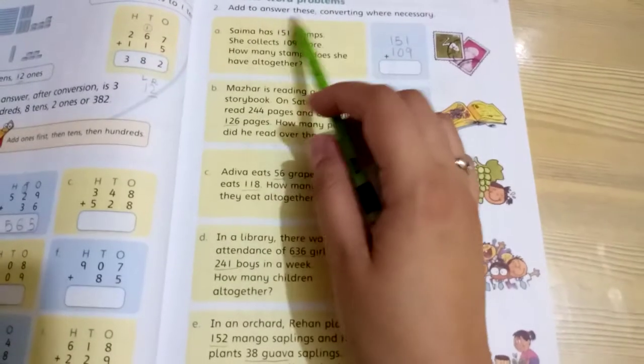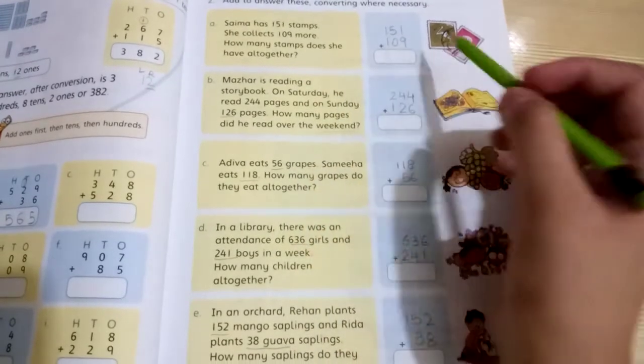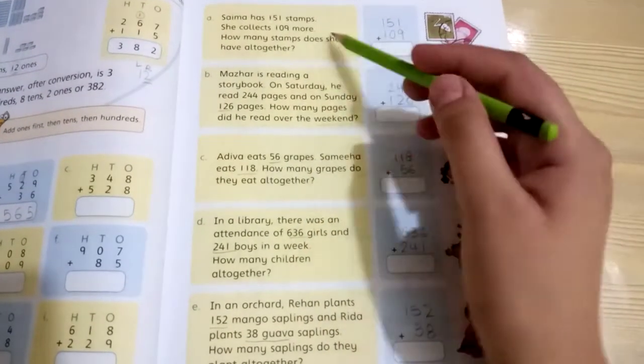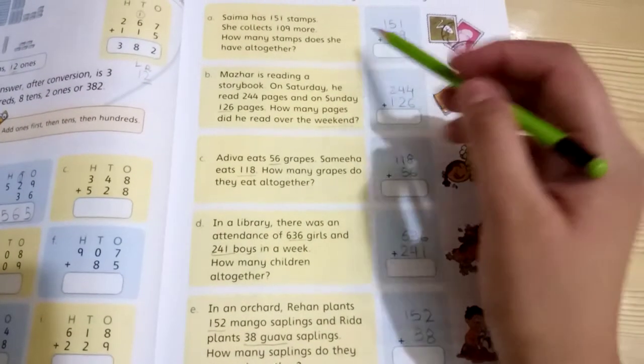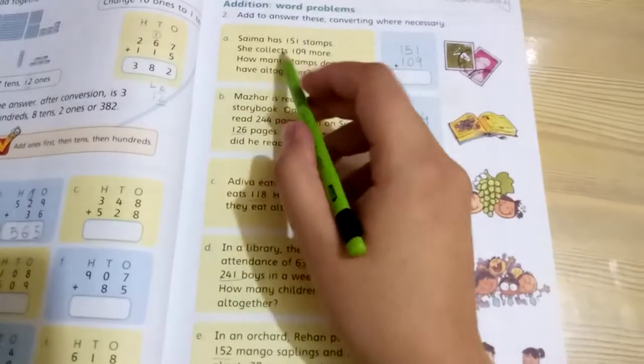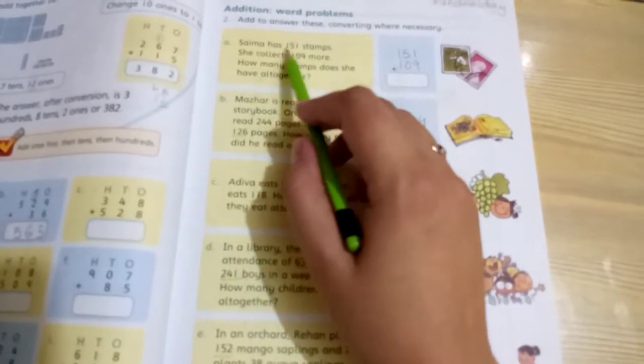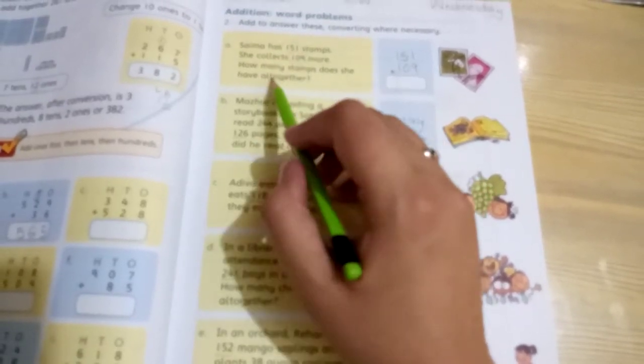Next page number 35: Add to answer these, converting where necessary. You have to answer the word problems. Make the sum as you understand. First, read it. Saima has 150 stems. She collects 109 more stems. How many stems does she have altogether? Add both to get the answer.